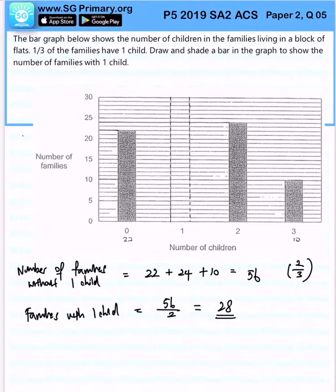So there are 28 families with one child and 56 families without one child. Since there are 28...